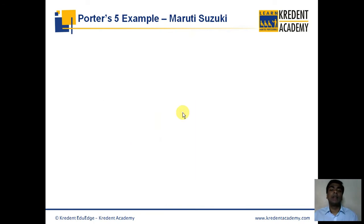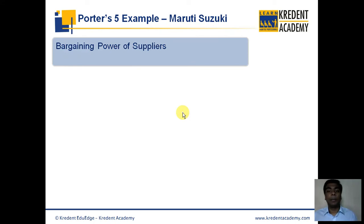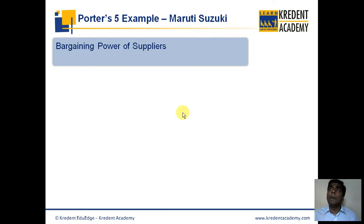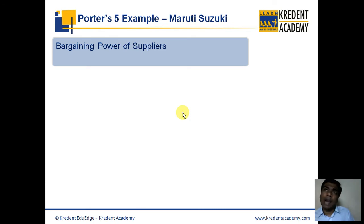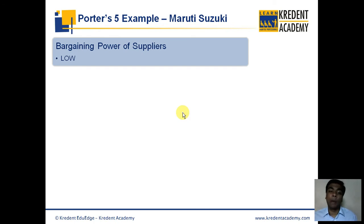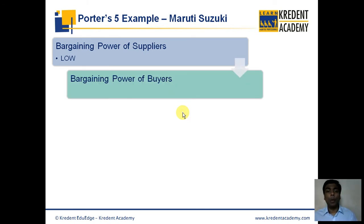Let us do a Porter's Five Forces analysis on Maruti Suzuki as an example. Regarding bargaining power of suppliers: Maruti Suzuki has several suppliers and procures from many different companies. Because of its strong standing in the industry, it is highly unlikely that suppliers will have a major influence on pricing or negotiations. Hence, the bargaining power of suppliers for Maruti Suzuki is low.